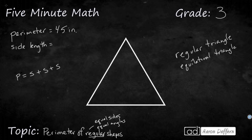Or we can do this: we can say perimeter equals, in this case, 3s — three times s because there are three sides. The whole perimeter is 45, so I'm going to replace perimeter with 45. So, 45 inches equals 3 times s. I'm going to put the s inside parentheses just so it doesn't look like a 5.